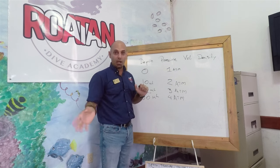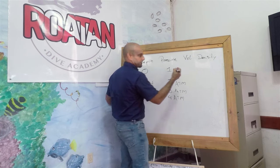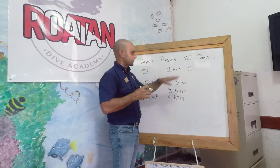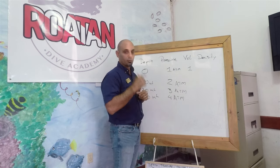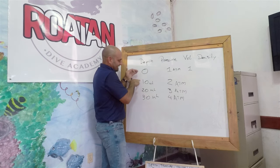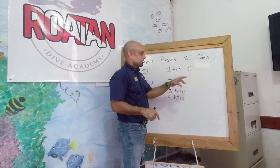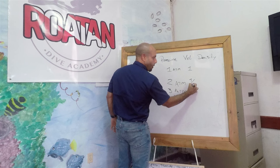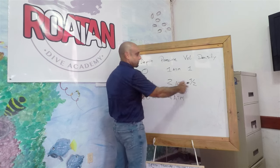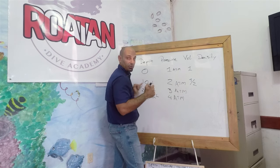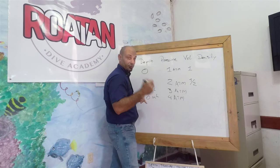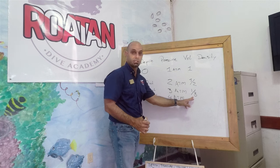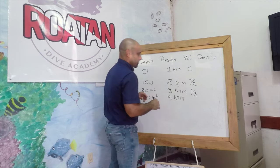Let's talk about volume and how Boyle's Law applies to volume changes. At the surface, let's say volume equals 1. When I descend to 10 meters, the volume decreases because it is inversely proportional to pressure — I get 1 divided by 2 atmospheres, so half the volume. At 20 meters with 3 atmospheres, I have one-third of the surface volume. Volume decreases as we go deeper, and if we bring an object back to the surface, it expands back to its original size.